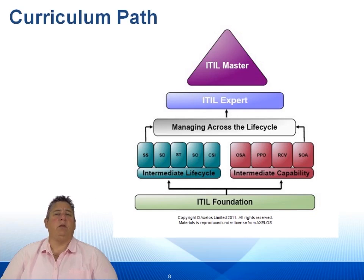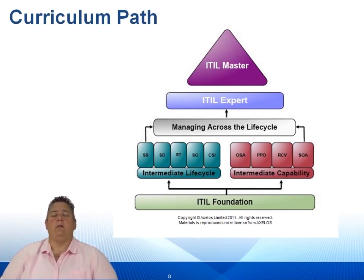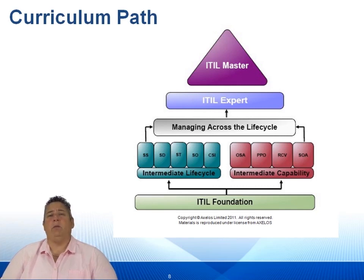The curriculum path — this diagram should be familiar to you. Obviously, we start at the foundation; it's a required course to get to any of the intermediates. The next required course is MALC, or Managing Across the Life Cycle, if you want to get to the ITIL Expert. The ITIL Expert requires that you have 22 credits. Managing Across the Life Cycle and the foundation provides seven of those credits, so between the life cycle and the capability courses, you need another 15. The life cycle courses are worth three credits and the capability courses are worth four.